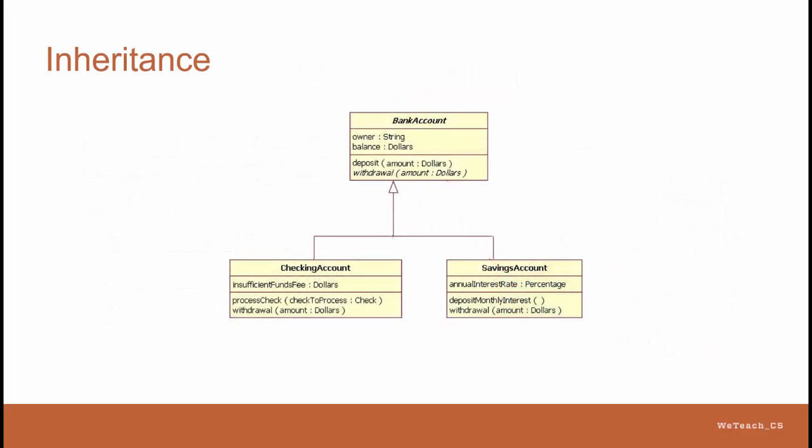Here is an example of inheritance, which you saw in the earlier lesson on visual organizers. This is the UML diagram of a bank account class, where the basic account is defined with two instance fields, the owner of the account and the balance of the account. The two processes that accompany the bank account data are a deposit and a withdrawal method.